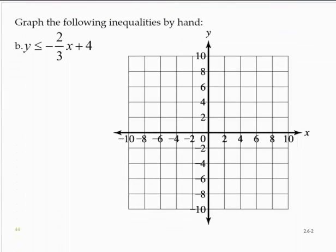y is less than or equal to negative 2/3x plus 4. So I'm going to graph y equals negative 2/3x plus 4. I'm going to use a solid line. If we have a less than or equal to or a greater than or equal to, we use a solid line.